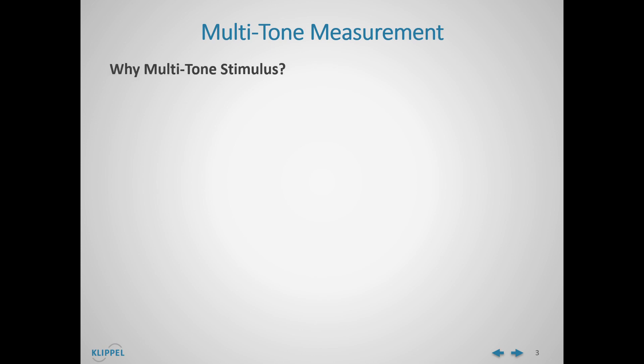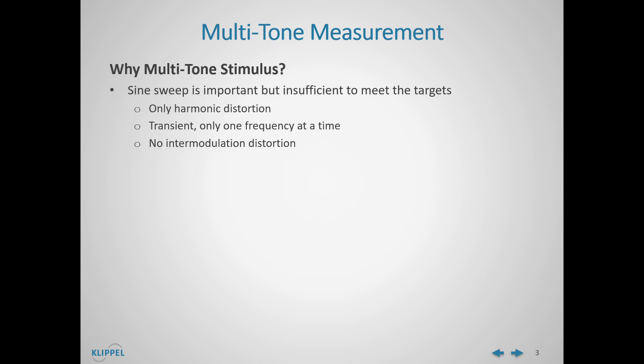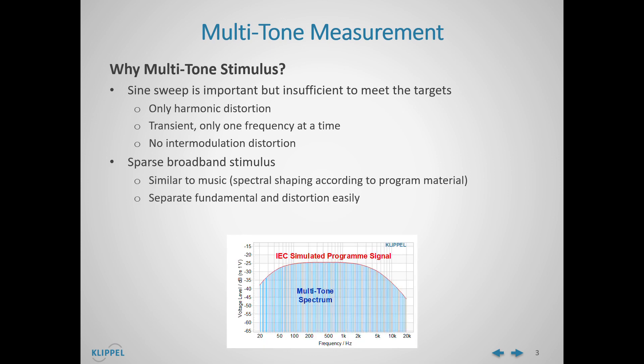So which advantage does the multi-tone stimulus have? In comparison with the sine sweep — the sine sweep is important, but it's insufficient to meet the targets. With a sine sweep we only get the harmonic distortion, it's a transitory signal, so we only get one frequency at a time, and it's not possible to measure the intermodulation distortion. However, the multi-tone stimulus is a sparse broadband stimulus which is similar to music, making it possible to apply a spectral shaping according to program material. In addition, fundamental and distortion can be easily separated, and the multi-tone stimulus is a reproducible, mathematically well-defined stimulus.